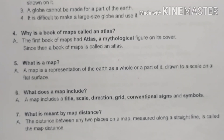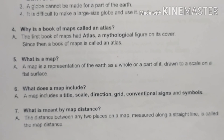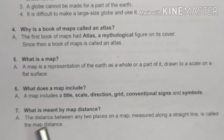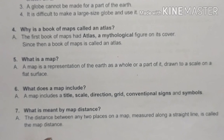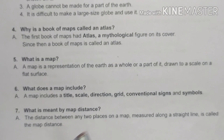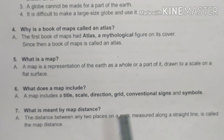Seventh question: what is meant by map distance? The real earth distance is different from map distance. The distance between any two places on a map measured along a straight line is called the map distance. For example, in a Tamil Nadu map, if we measure the distance between Madurai and Chennai on the map, that distance is the map distance.